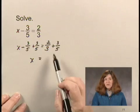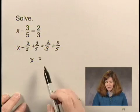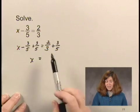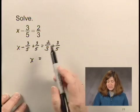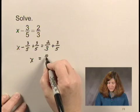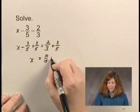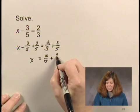In order to add 2 thirds and 3 fifths, we need to get a common denominator, and that common denominator would be 15. 2 thirds equals 10 fifteenths, and 3 fifths equals 9 fifteenths.